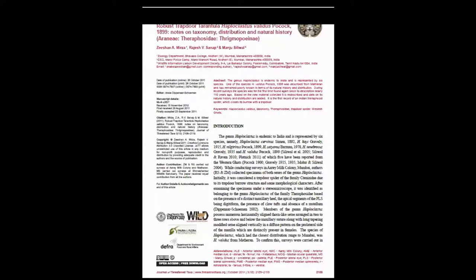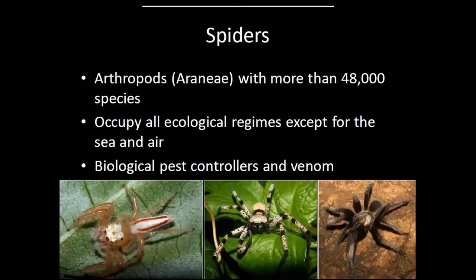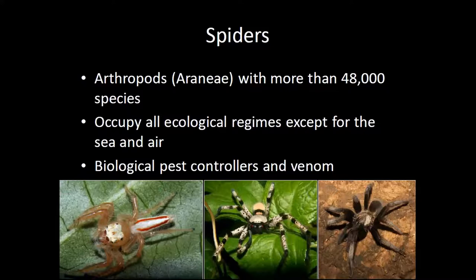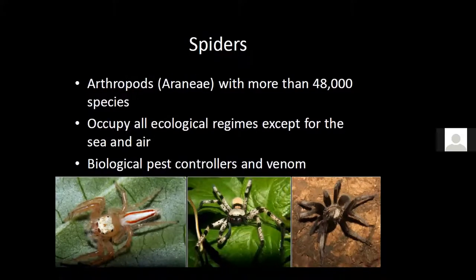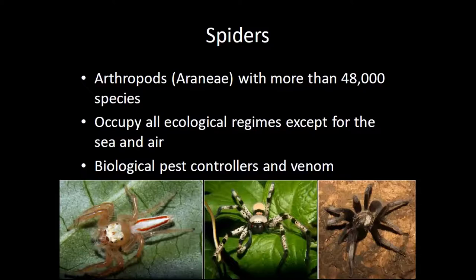We published a paper showing the male on the left and the female on the right belonged to a single tarantula species described in 1899 that had never been found again. We not only rediscovered the species, but showed the male and female had been described as two separate species but were actually one. This was the beginning of my interest in pursuing tarantula studies. As we continued, we found additional species and traveled across the Western Ghats in search of tarantulas and other mygalomorph spiders.